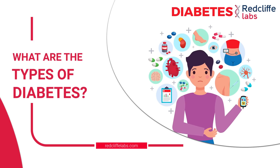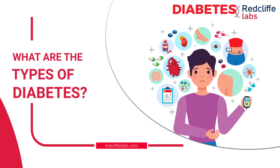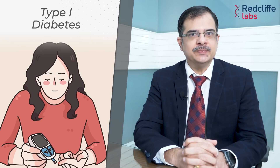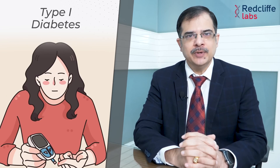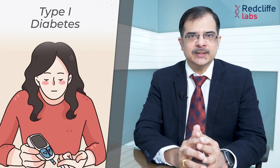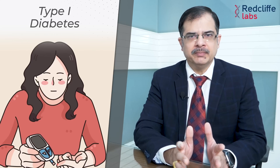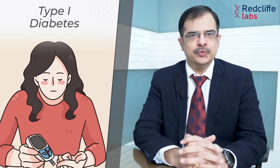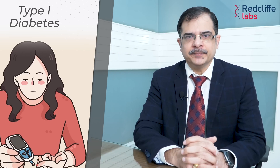What are the types of diabetes? Diabetes 4 prakar ke ho sakte hain. Type 1 diabetes, jis me insulin bilkul nahi banta body mein, kyunki pancreas ke jo beta cells hain woh bilkul destroy ho gai hain, ek autoimmune condition ki wajah se. Aur yeh bachon mein zyada common rehta hai.